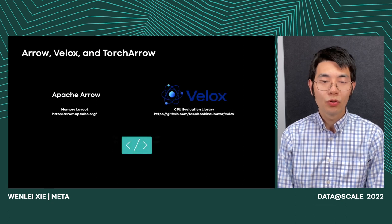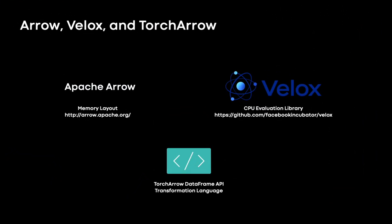To recap, TorchArrow is about: first, using Arrow as the unified memory layout to integrate with the ecosystem; second, integrating with Velox for the CPU evaluation library and user UDF authoring; and finally, providing a DataFrame API to express the transformation logic.